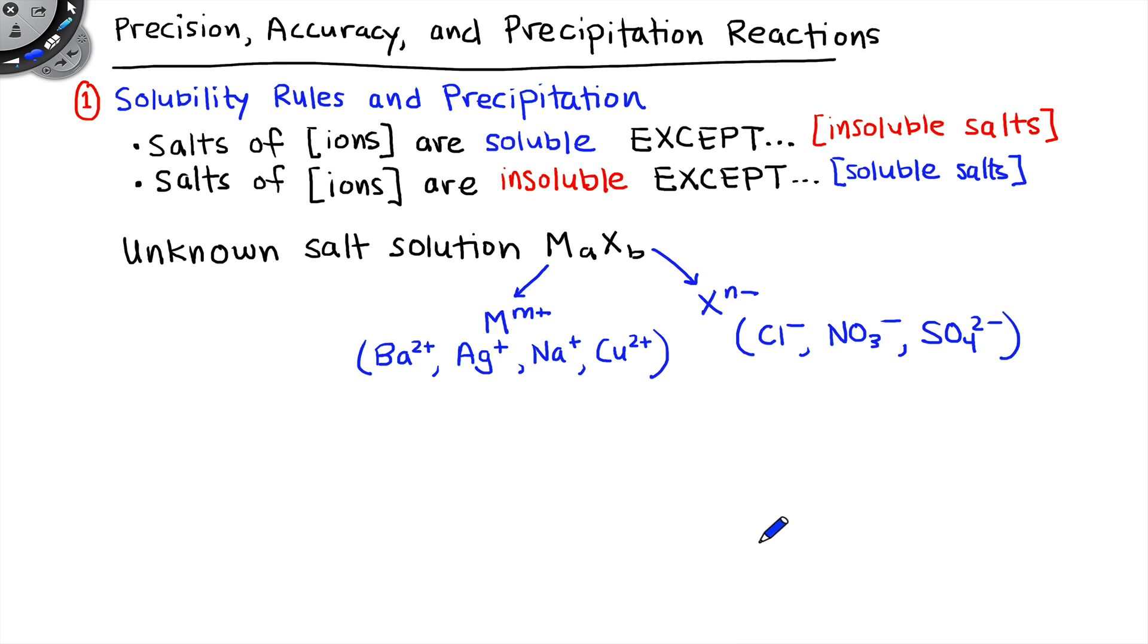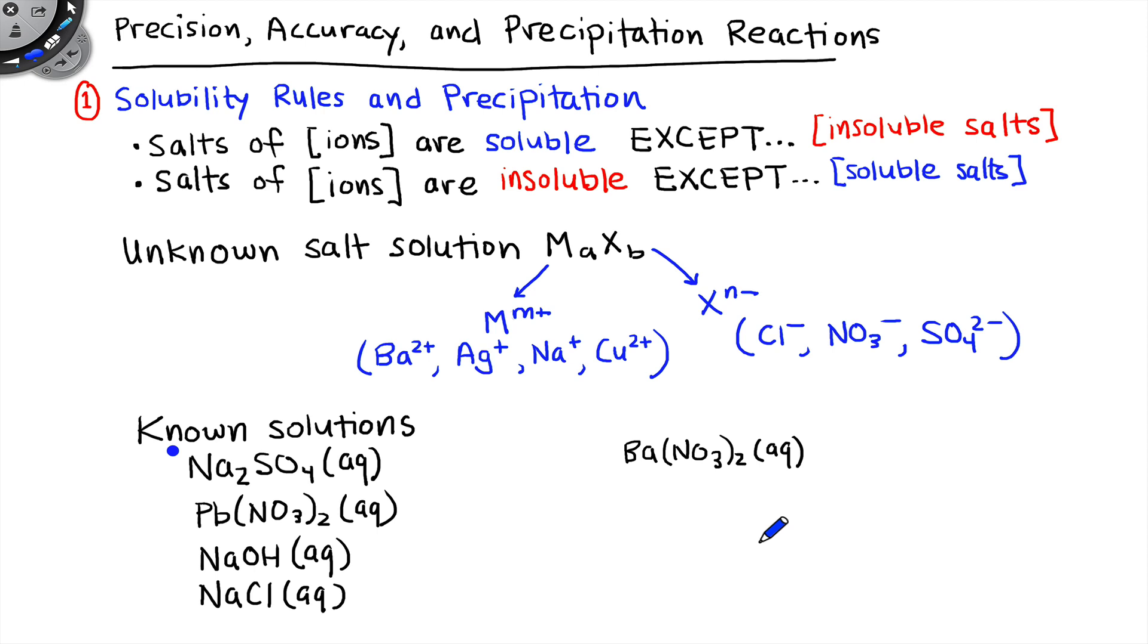Now, how are we going to figure out the identity of the unknown salt solution? Well, we'll have a set of known solutions, and these known solutions will have known identities. They'll be labeled on the bottle. They'll be sodium sulfate, lead(II) nitrate, sodium hydroxide, sodium chloride, and barium nitrate.